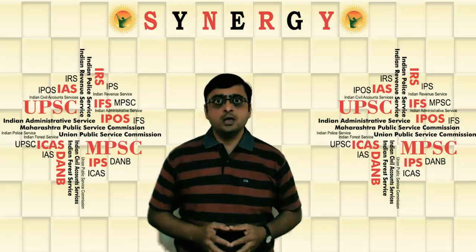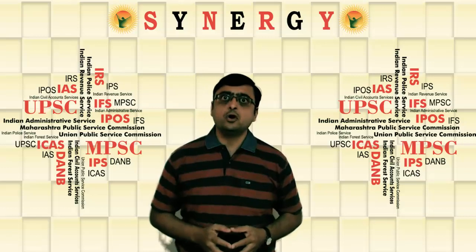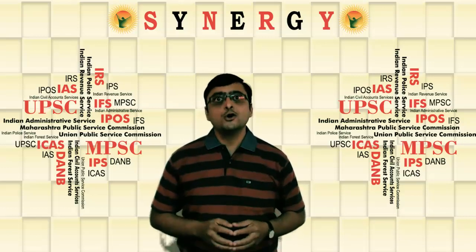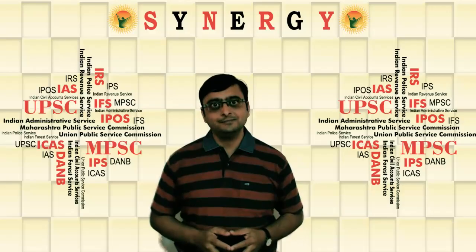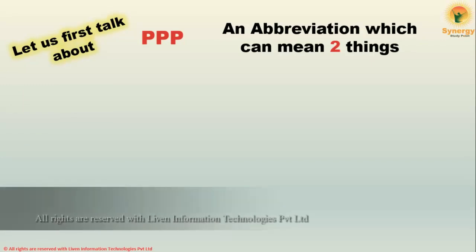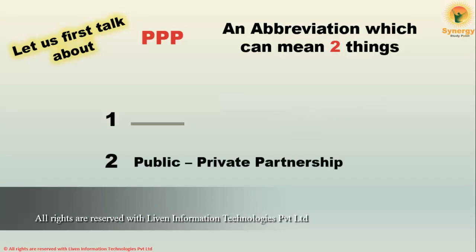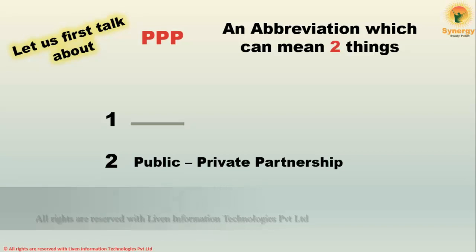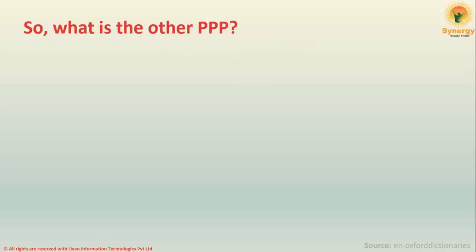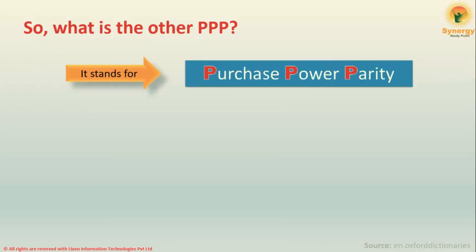In this video we will learn one such technique of comparison — one more constant called PPP. PPP is an abbreviation which has two meanings for two different things. The second one stands for public-private partnership, which is a type of business model and will be covered in another video. Coming back to the first meaning of PPP, it stands for purchasing power parity.